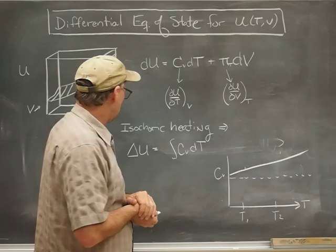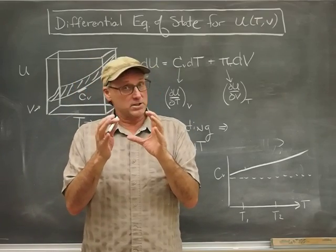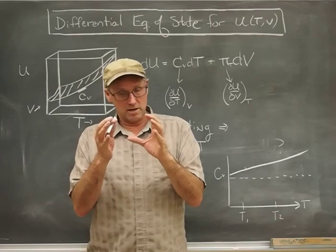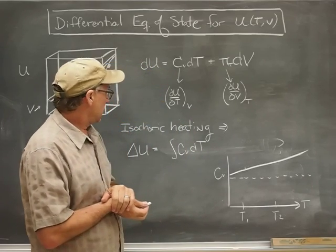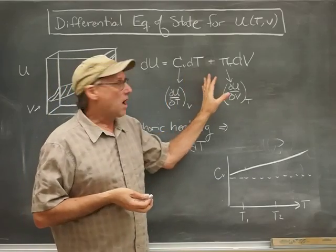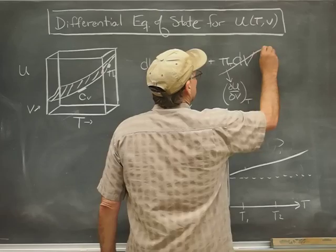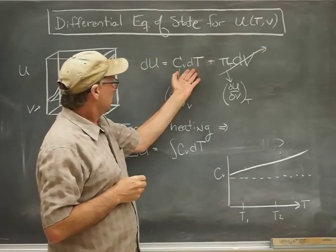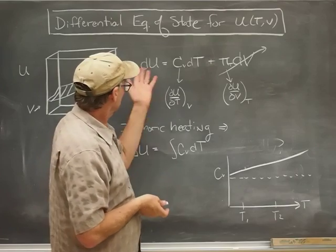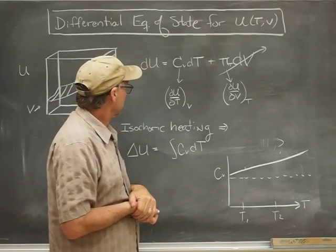Now, if we're thinking about a process in which a system is being heated up isochorically, that means it's being heated up while the volume is constrained to stay the same, then we have an easier job of it, right? Because I know that there's no change in the volume. So I can strike that term out here and I know that a temperature change multiplied by that coefficient will produce a small change in the internal energy.